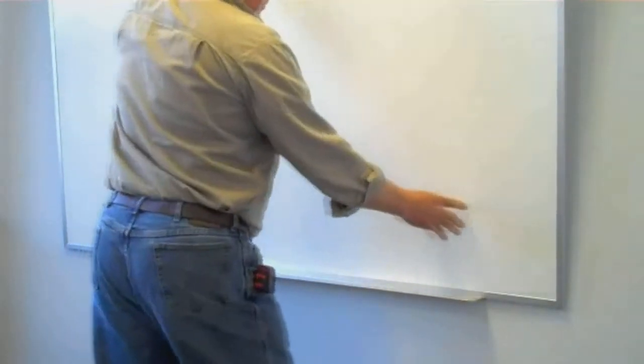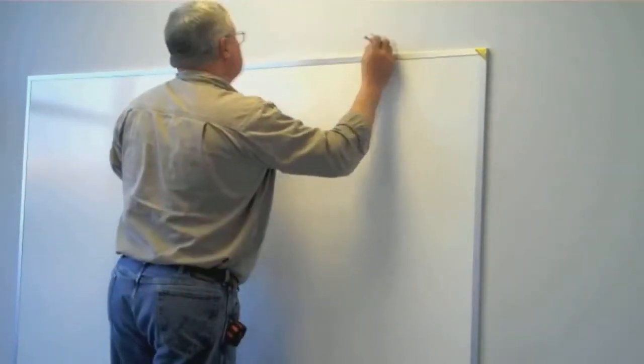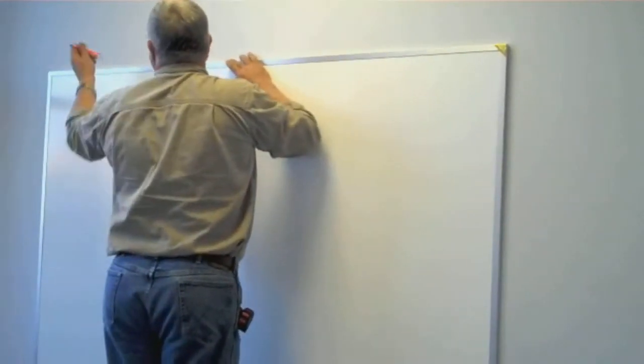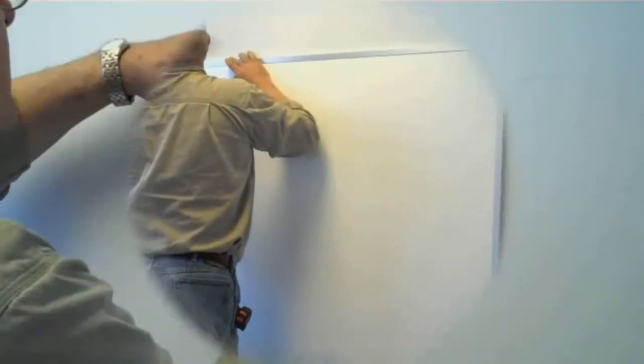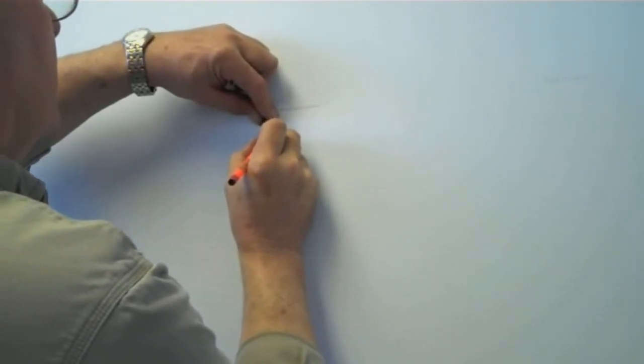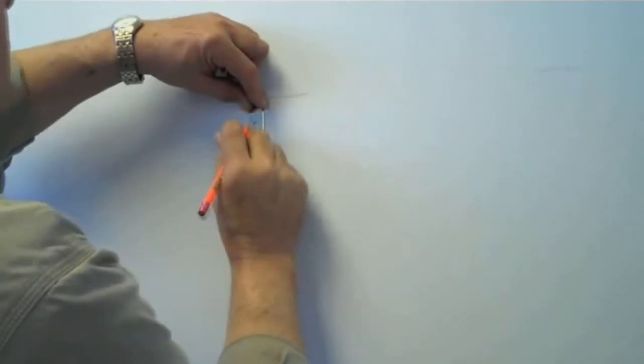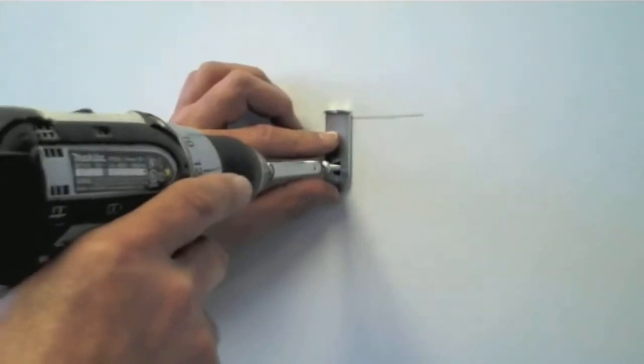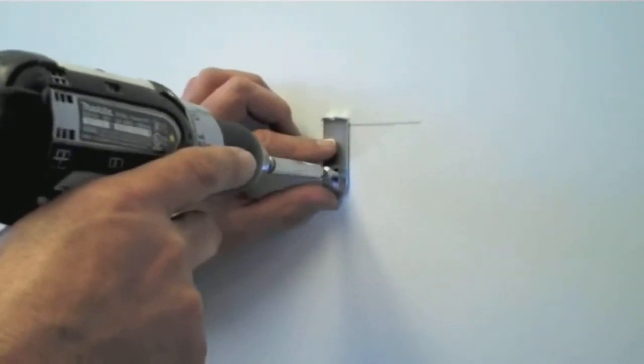Center the marker board onto the tray. Then mark a line along the top edge of the marker board. After removing the board, position the top edge of the L hangers along this line. Screw in the center of each hanger slot and snugly fasten.